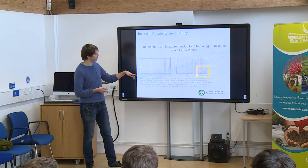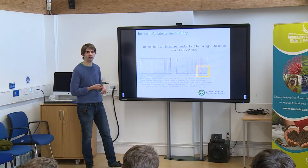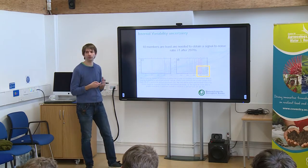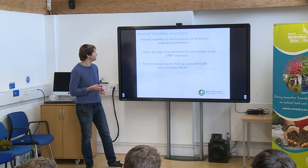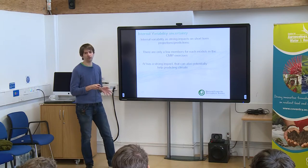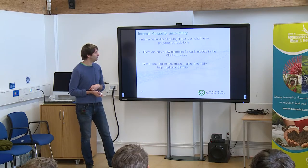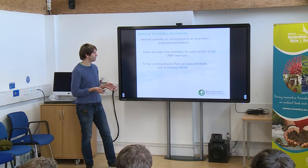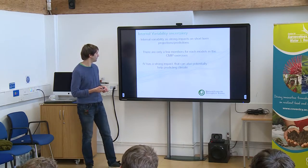Of course, this is for year-to-year variability. If I do a 10-year running mean over the time series, I would only need two or three members to get something consistent over both the central and western Sahel. So internal climate variability has a strong impact particularly on short-term projections, and less so for long-term projections at the end of the 21st century — which could be a problem given the few ensemble members available in the CMIP5 exercise.